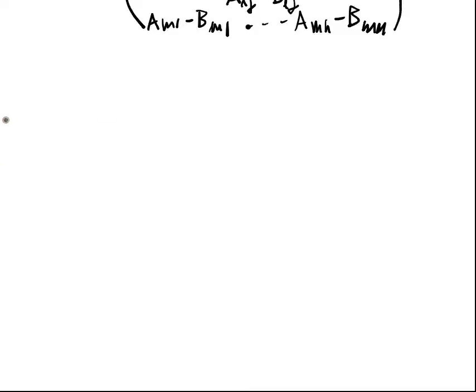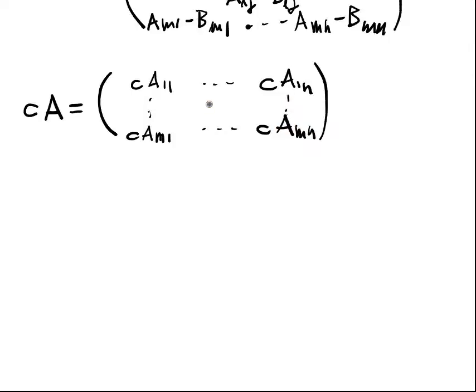Now we can also define scalar multiplication. So we'll say for a constant c, cA is equal to, we multiply this by all the entries of A. So we'd have cA11, all the way up to cA1n, all the way down to cAm1, all the way up to cAmn, and the general entry is cAij.